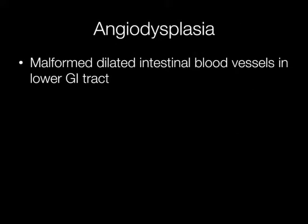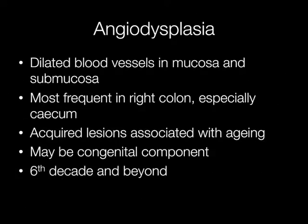Angiodysplasia is caused by malformed dilated intestinal blood vessels in the lower gastrointestinal tract. The dilated blood vessels in angiodysplasia are situated in the submucosa and the mucosa.